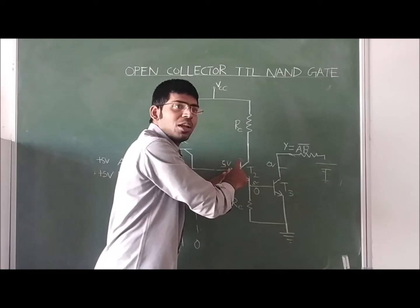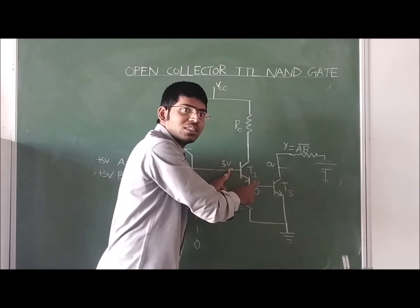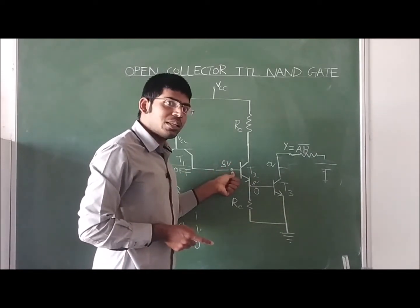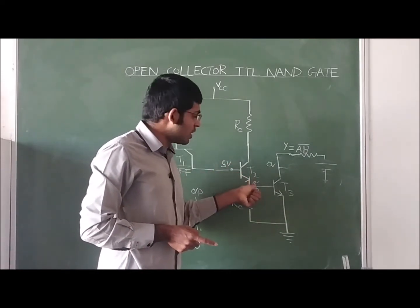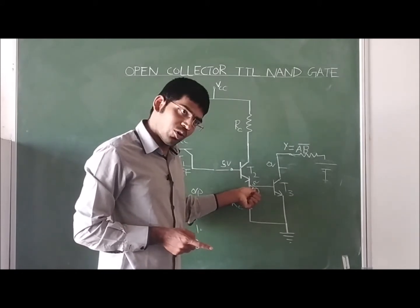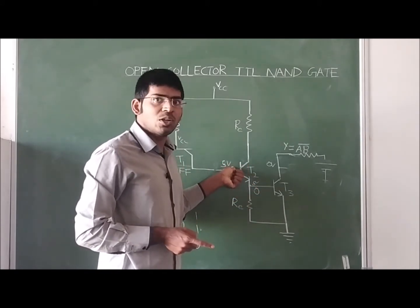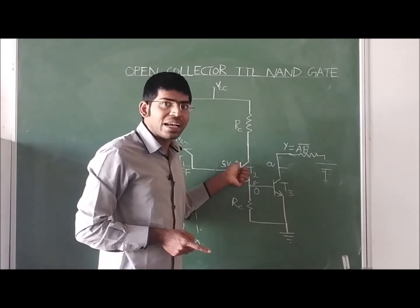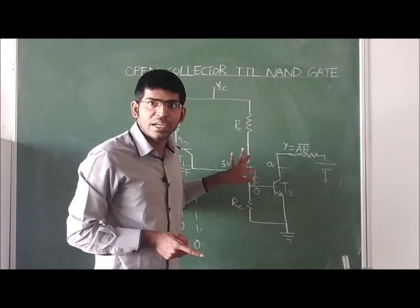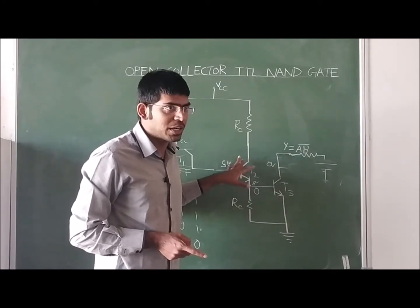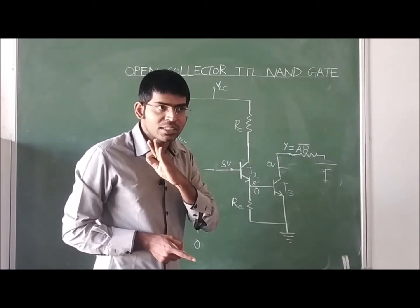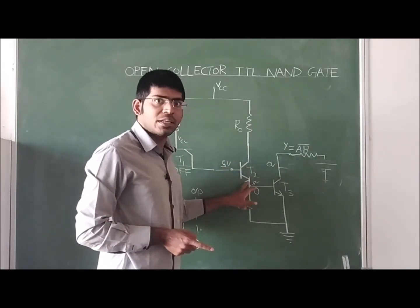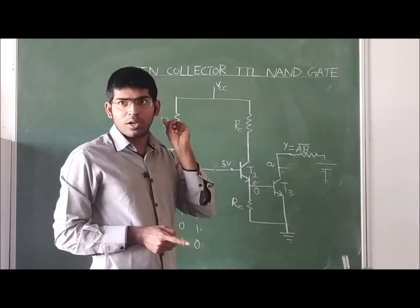Whatever voltage is available at the base, the same voltage will be available at the emitter. If the base voltage is 5 volts, the emitter is also 5 volts. If the base voltage is 0, the emitter is also 0. Only current amplification can be done in Common Collector configuration; there is no voltage amplification. The voltage amplification factor is 1.